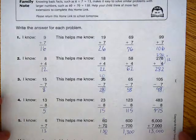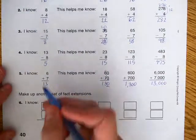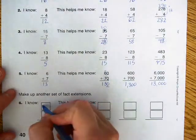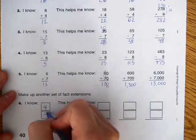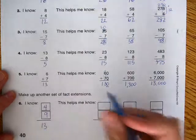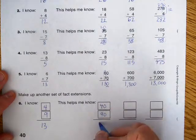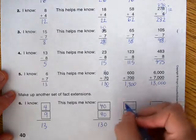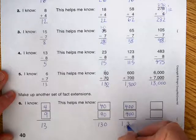Make up another set of fact extensions. You could do any of them. So how about we just do, I know that 4 plus 9 equals 13. So this helps me know that 40 plus 90 equals 130, and 400 plus 900 equals 1,300.